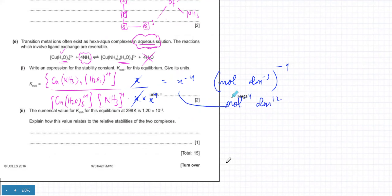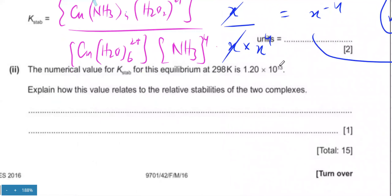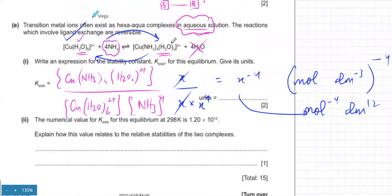A high Kstab value means more products are formed — the ligand exchange happens readily and the product complex is more stable. In this case Kstab = 1.2 × 10¹³, which is very high, indicating that the forward reaction is strongly favoured: the amine complex is much more stable than the aqua complex, and the aqua complex is relatively unstable.